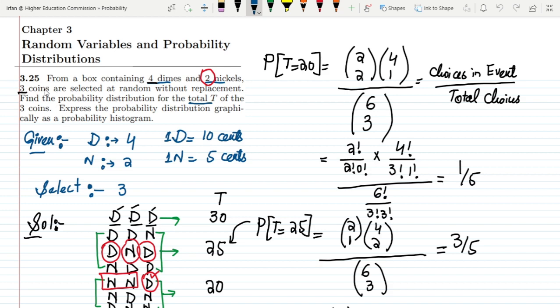So here we have a statement: from a box containing four dimes and two nickels, three coins are selected at random without replacement. Find the probability distribution for the total T of the three coins.